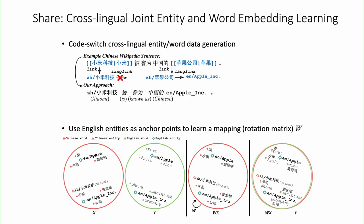What we did is replace each anchor text in Wikipedia with its anchor link title. If it has an English title, we replace it with the English title. For example, Xiaomi was replaced with 'Xiaomi Technology' in Chinese, and apple is replaced with 'Apple Incorporated.' The sentence then becomes a code-switched sentence, which reads like 'Xiaomi is known as a Chinese Apple Incorporated.' We do this for all 300 languages in Wikipedia including English. Then we can learn a rotation matrix to align the Chinese space with the English space because we have shared English anchor links as pivots.